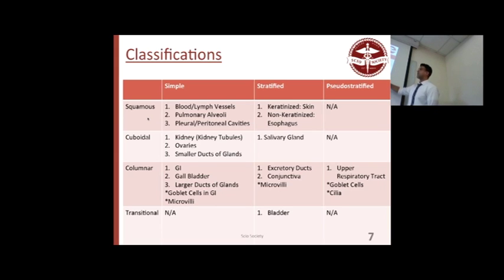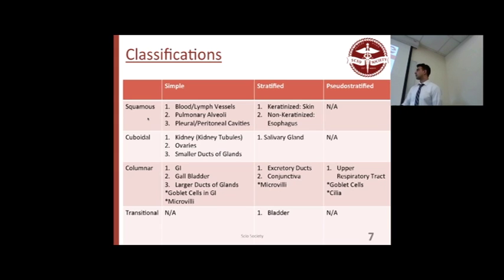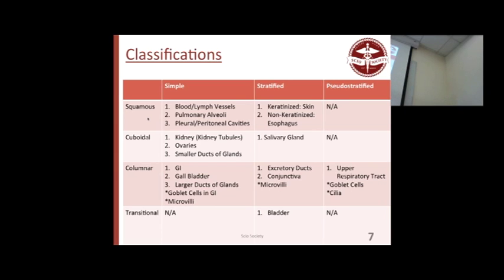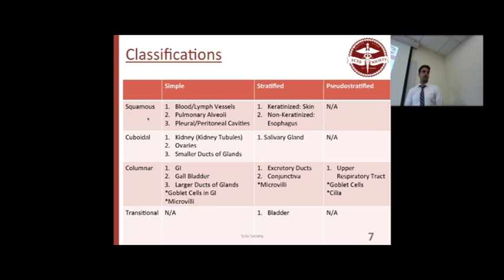Pseudostratified columnar cells have cilia. Cilia are important because they help move mucus around, and most are found in upper respiratory tracts with goblet cells. Sweat glands are in cuboidal — simple as well as sometimes stratified — and the small ducts and glands would be like the ducts of sweat glands.